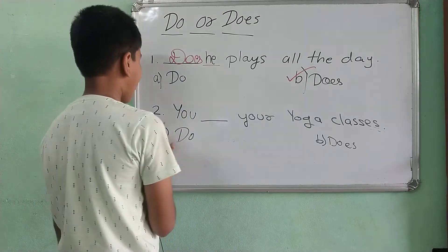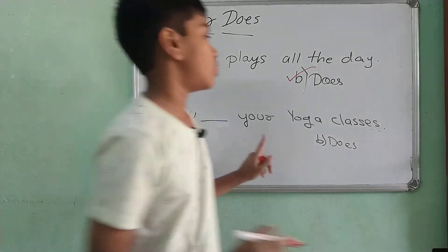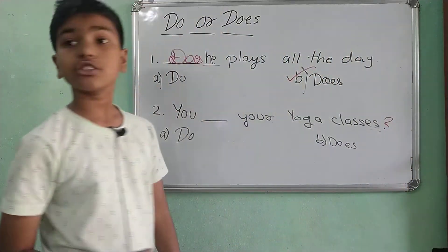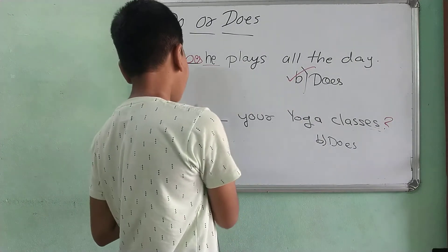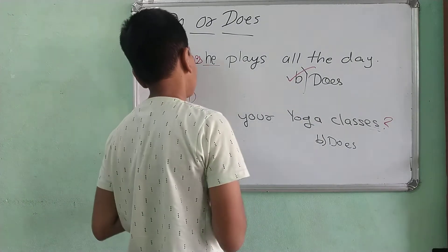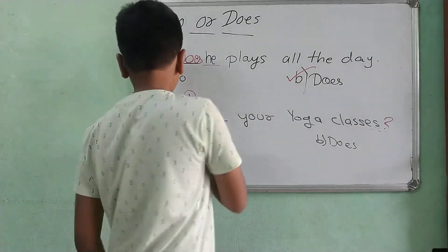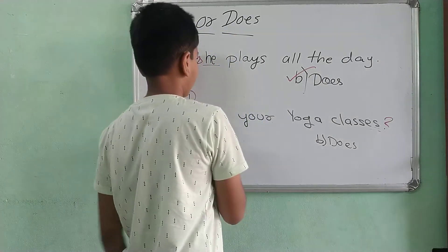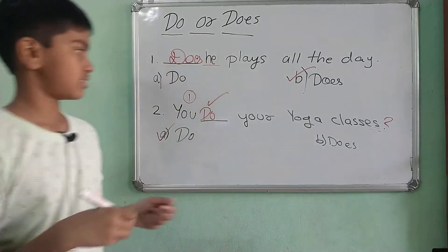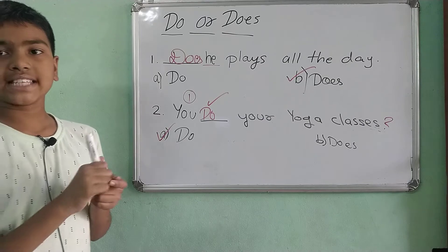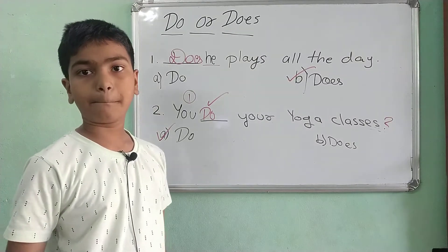Next: blank — you do your yoga classes. It's still asking a question, but 'you' is in the second person format. So it should be 'do.' You do your yoga classes — that's correct.